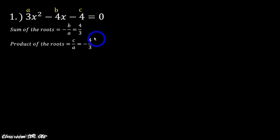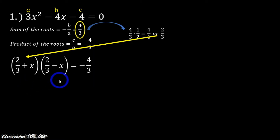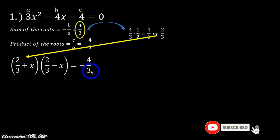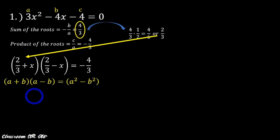The next step is to take one half of 4 over 3. Multiplying 4 over 3 by one half gives 4 over 6, reduced to 2 thirds. We will use this 2 thirds in our factors. We write: (2/3 + x)(2/3 − x) equals negative 4 over 3, which is the product of the roots. This may look complicated, but observe it carefully.